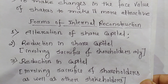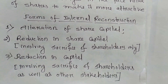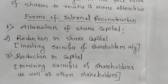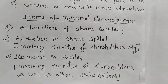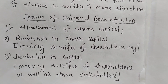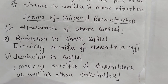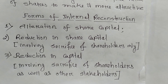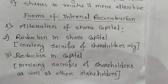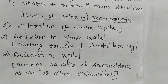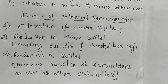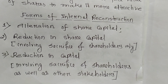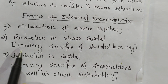Next, let us look at the forms of internal reconstruction — that means the different ways through which internal reconstruction can be carried out. Basically there are three forms. The first is alteration of share capital, which means making a change in share capital. The second is reduction in share capital.